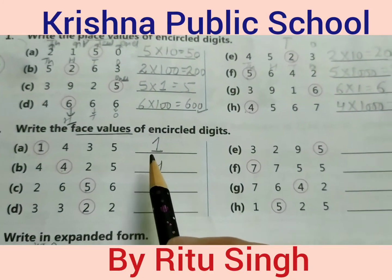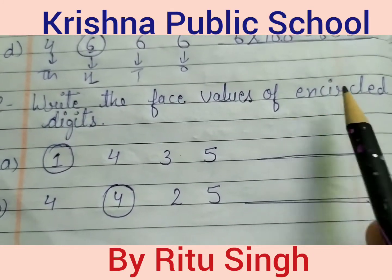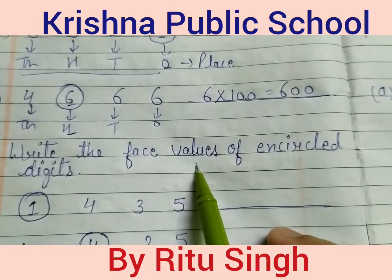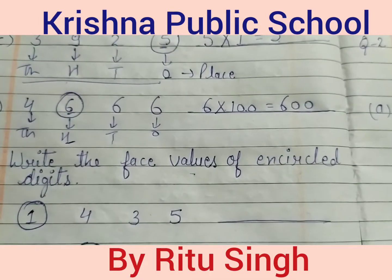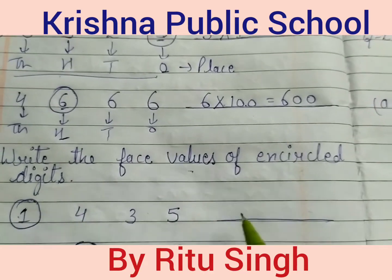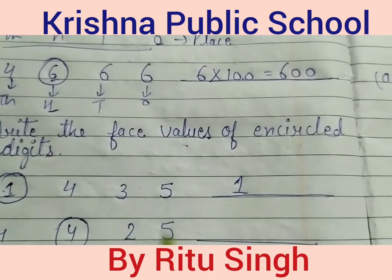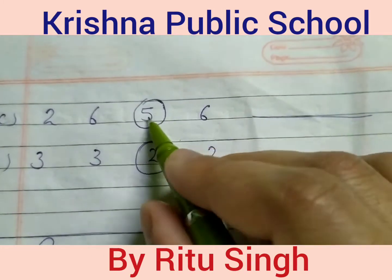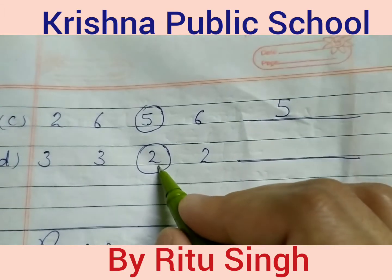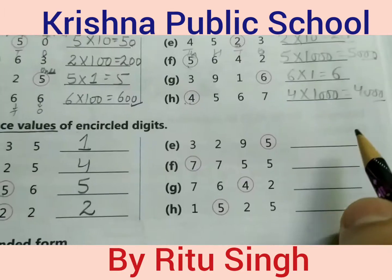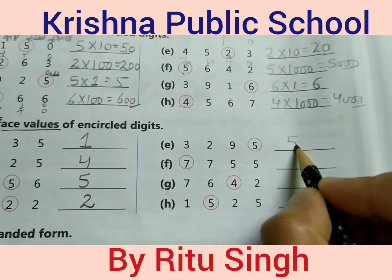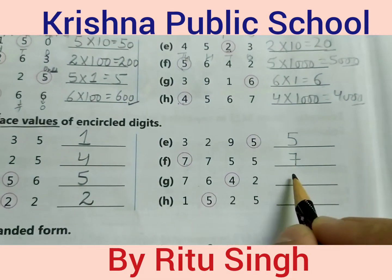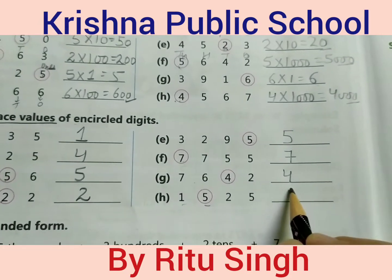Next question: write the face values of encircled digits. The face value is the value itself. Write 1 — this is the face value of 1. Write 4 — this is the face value of 4. The face value of 5 is 5. The face value of 2 is 2. The face value of 5 is 5. The face value of 7 is 7. The face value of 4 is 4. The face value of 5 is 5.